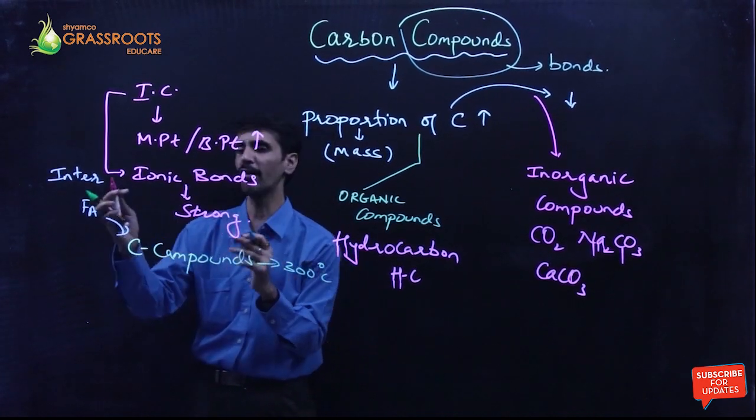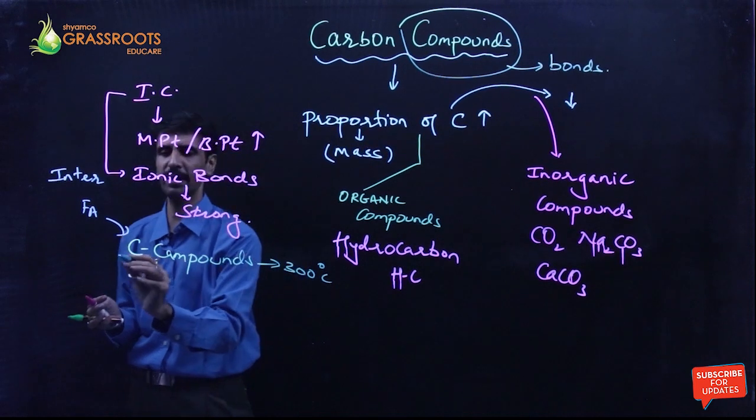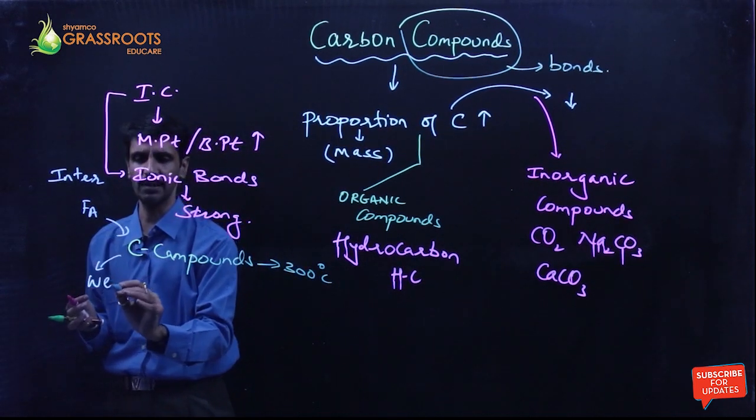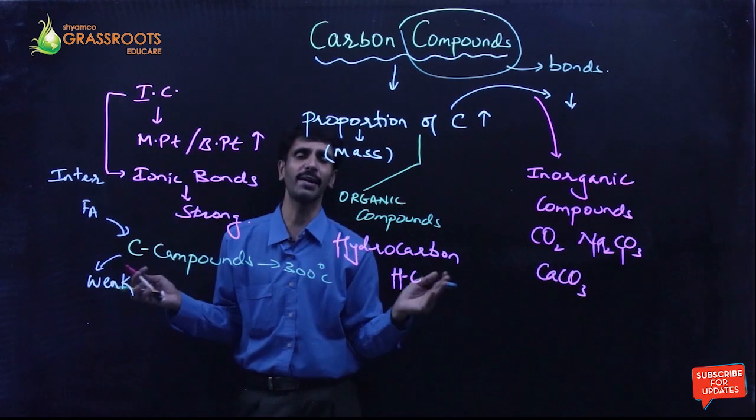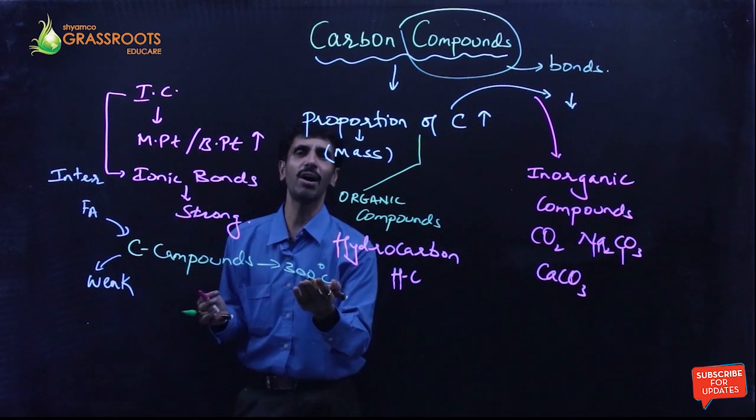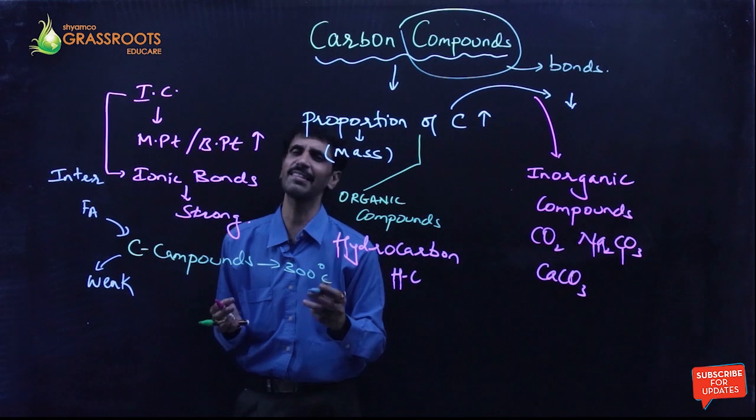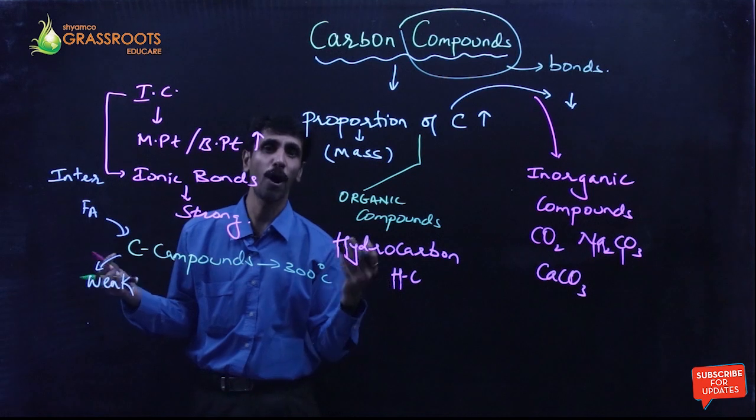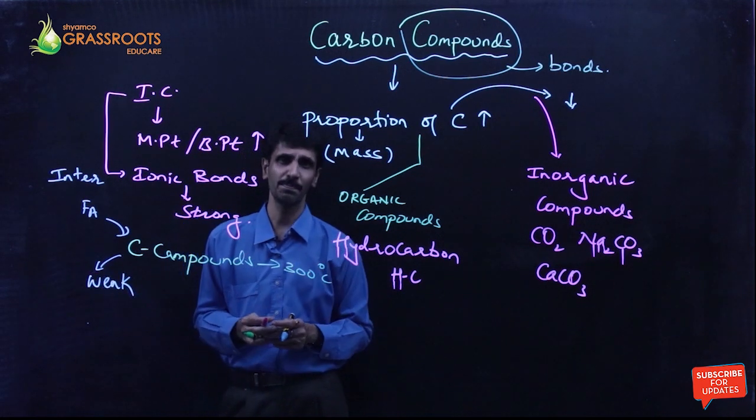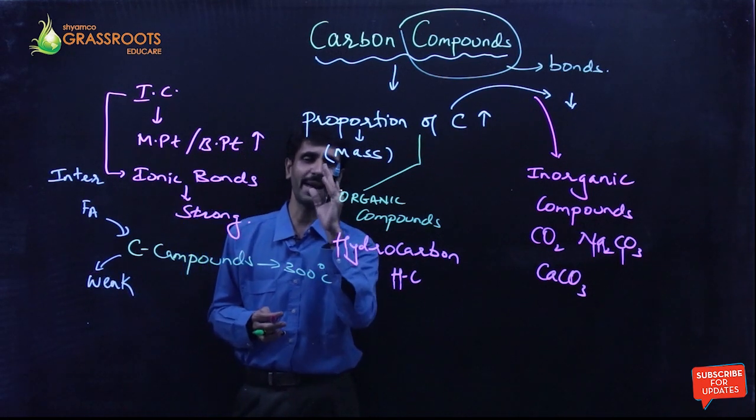Here, what do we say? In carbon's case it is weak. And this is why we say, weak bonds require less amount of energy to break. So around 300 degrees Celsius energy is sufficient to break these bonds. And that's why we say carbon compounds melt or boil at such a low temperature. So this is the first evidence.